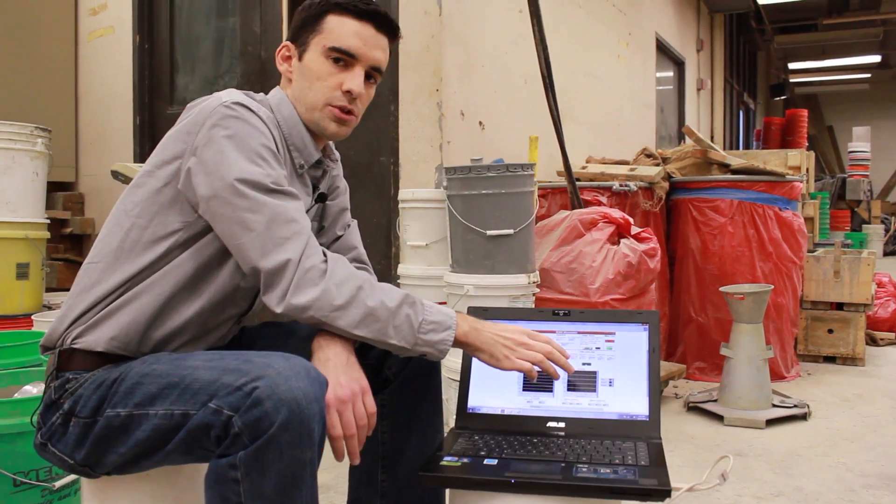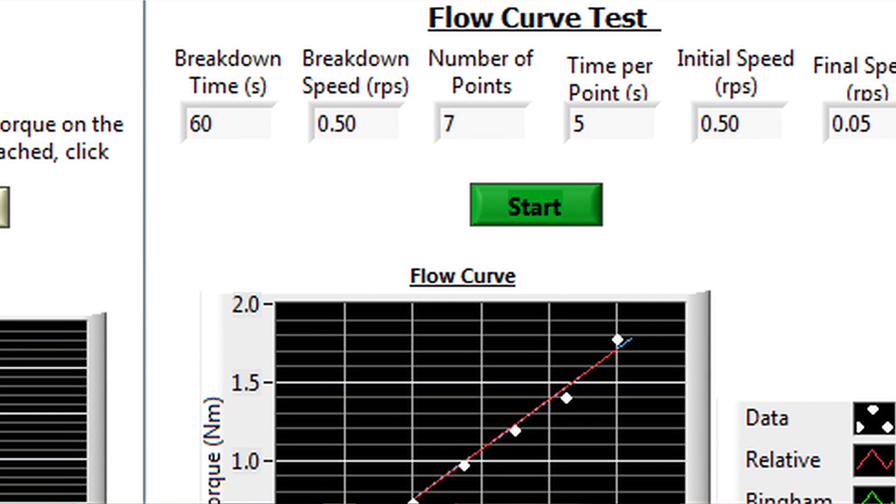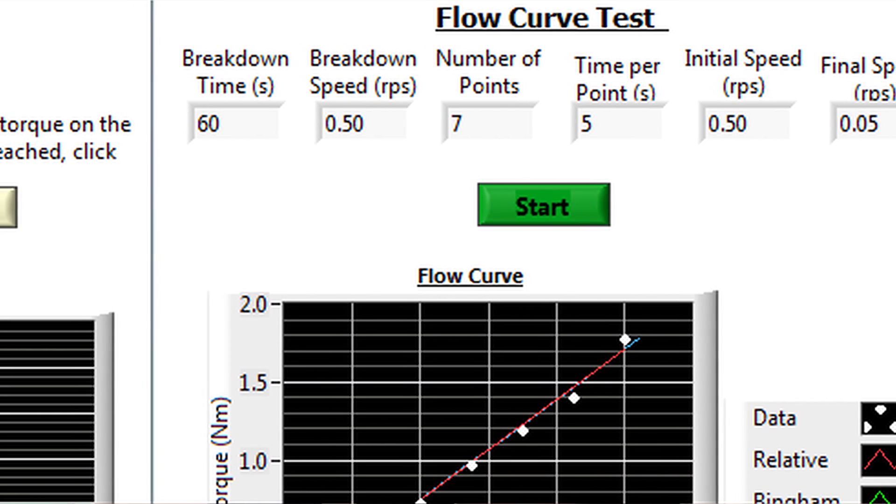Once we record those two tests, we'll analyze the data, measure the area between the two curves, and calculate that as the thixotropy.